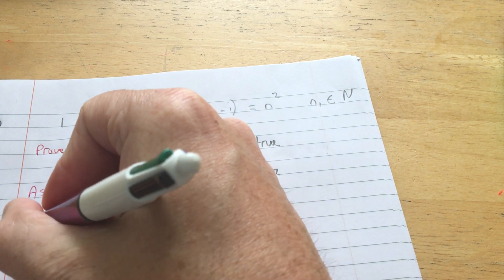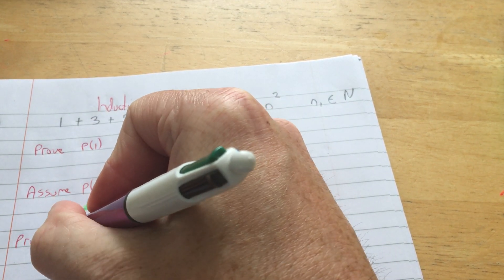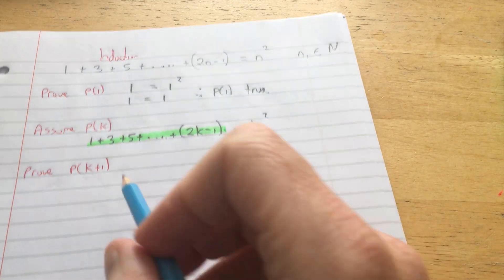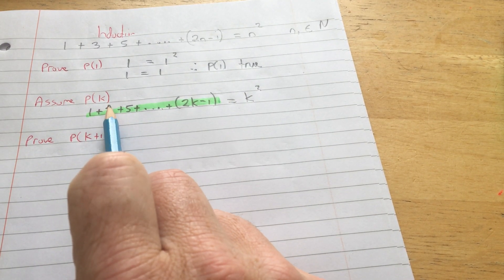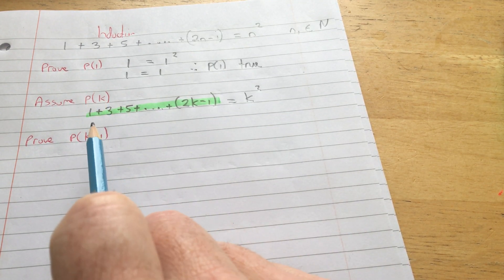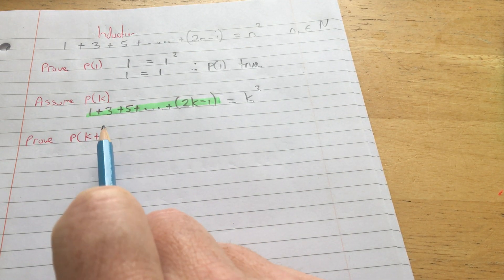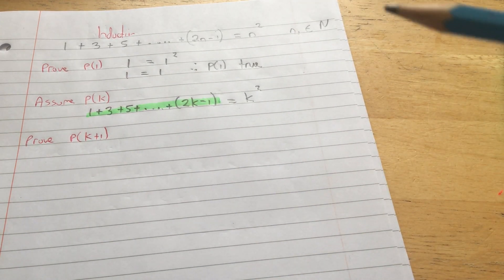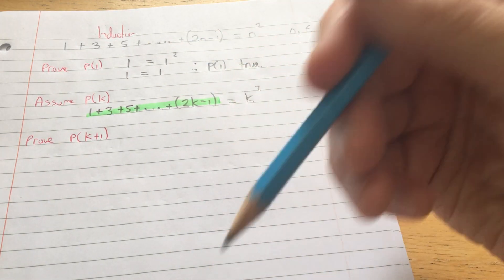And now, assuming P(k) is true, I prove the proposition is true for k plus 1. So up here, I said that k could be 1, it could be 10, it could be 100. Sorry, k could be 10, 100, or 1,000. So that means that k plus 1 would be 11, 101, or 1,001. k is just one more. Sorry, k plus 1 is one more than k.